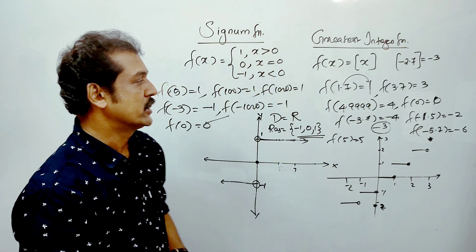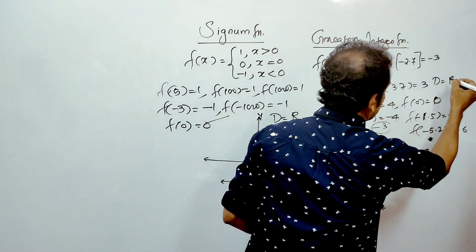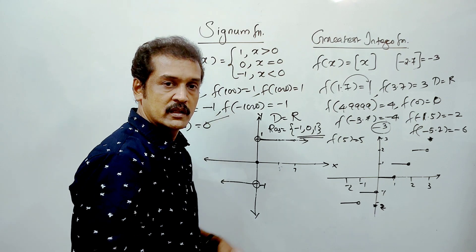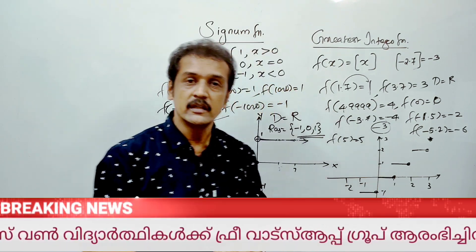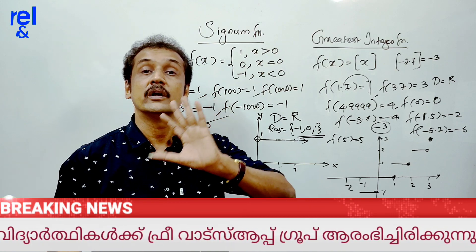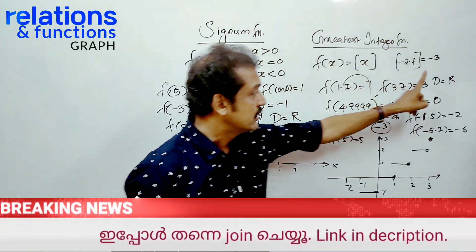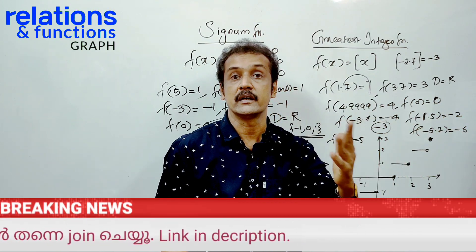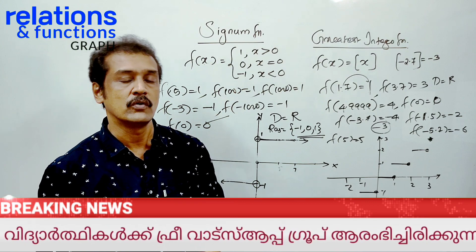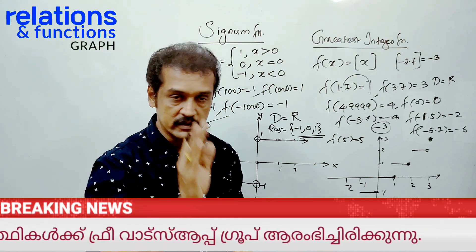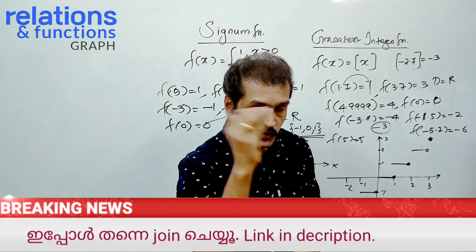What is the domain? The domain is the set of all real numbers. Range is the set of all integers. The answer is the integer. Domain is capital R and range is the set of all integers.